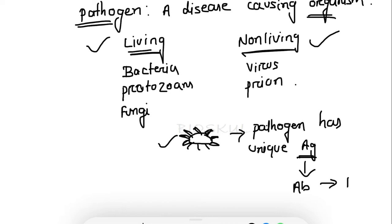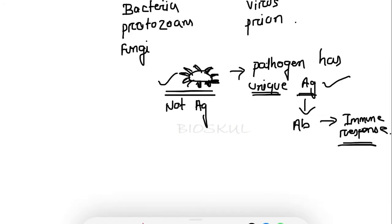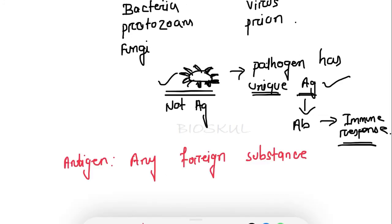These antigens generate an immune response. To be clear: a pathogen is a disease-causing organism, and on the surface of the pathogen, unique antigens are present. That means the whole pathogen is not an antigen. Some part of the pathogen acts as an antigen, and that antigen generates the immune response.